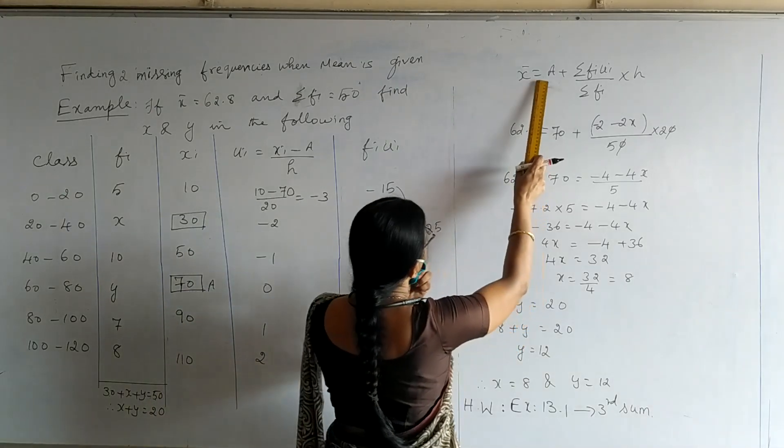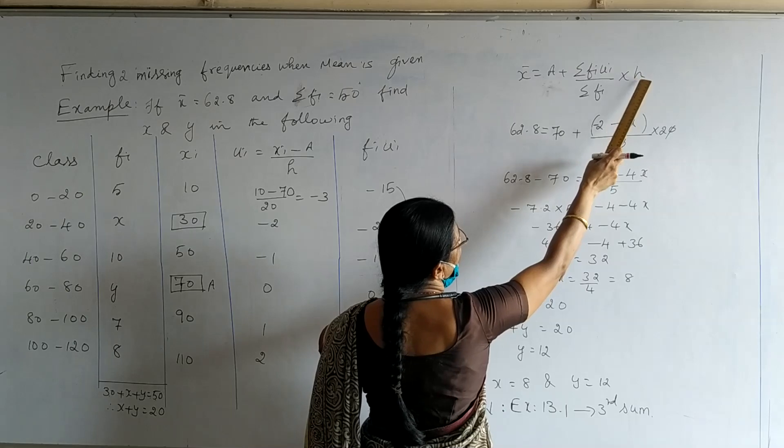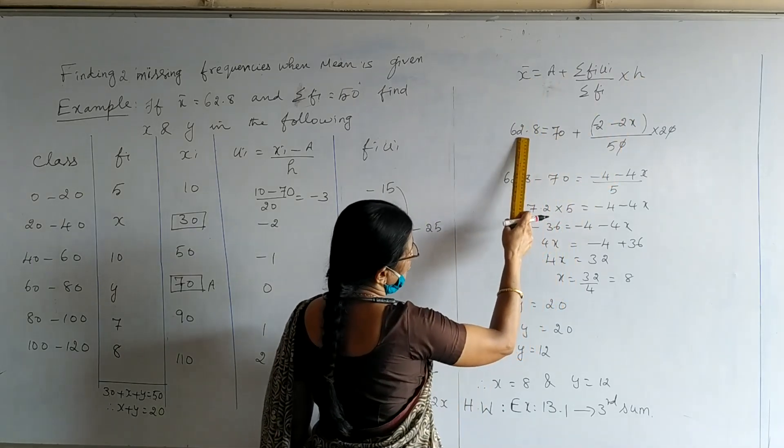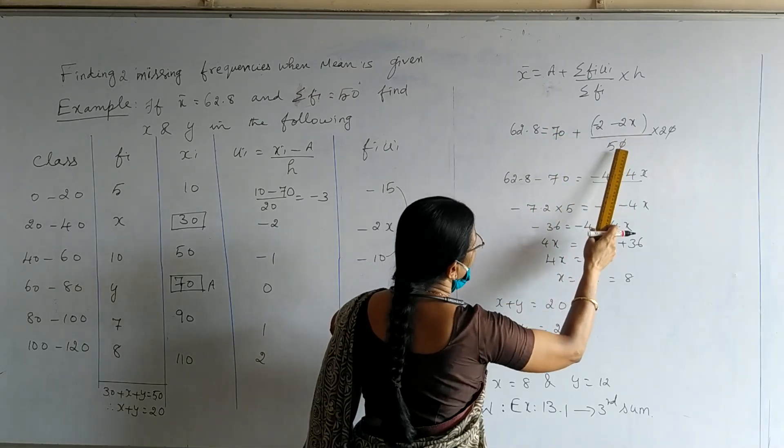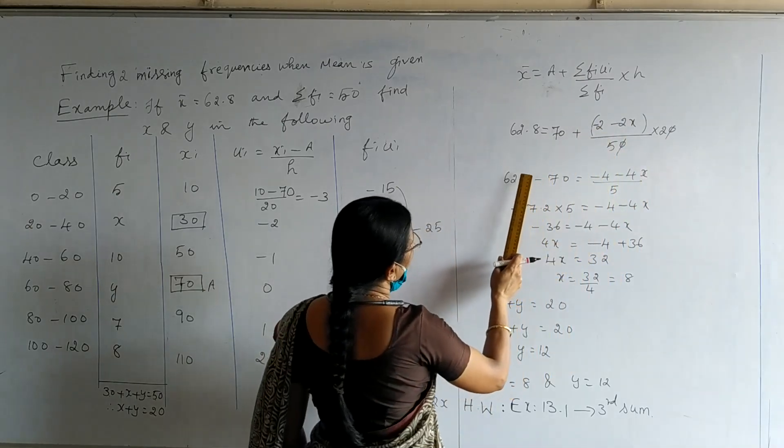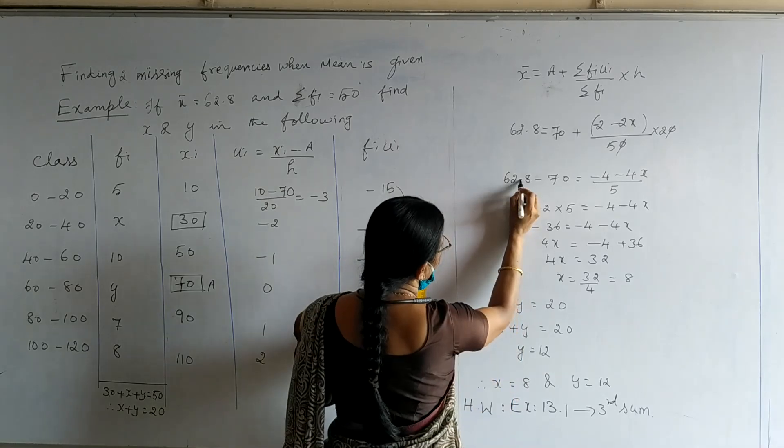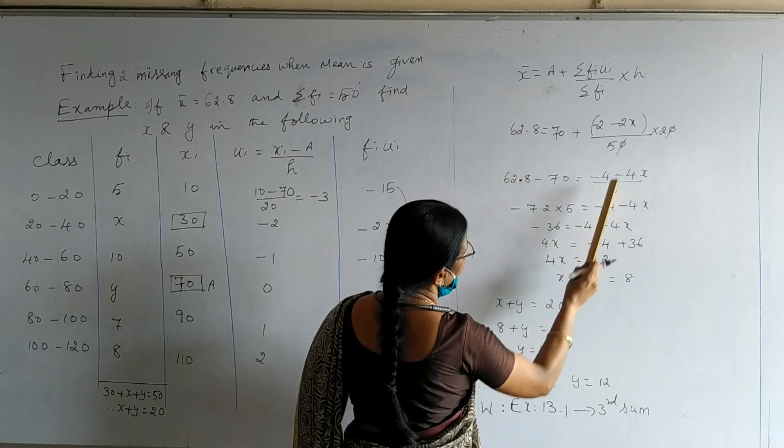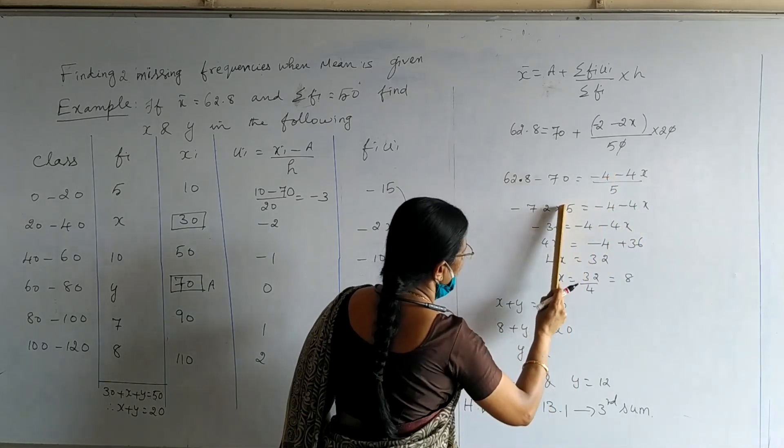Let us go for the calculation. x̄ is a plus sigma fi ui upon sigma fi into h. x̄ is given in the question as 62.8. Substituting the values of a, sigma fi ui, sigma fi and h, we are getting all these numbers. So, I have brought 70 to the right, which becomes minus 70. Subtracting, we get minus 7.2, multiplied by 50, which is equal to minus 2 minus 2x. So, solving, we get x is equal to 8.